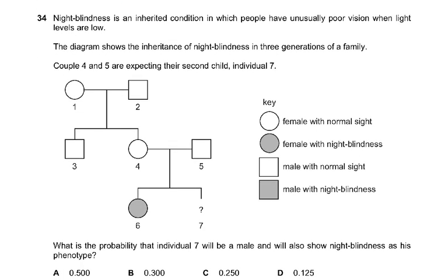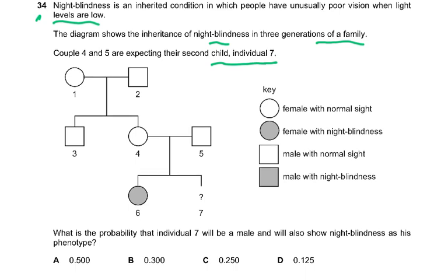Question number 34 is a tricky question. Night blindness is an inherited condition where people have unusually poor vision when light levels are low. The diagram shows the inheritance of night blindness in three generations of a family. Couple 4 and 5 are expecting their second child, individual 7. What is the probability that individual 7 will be male and will also show night blindness?